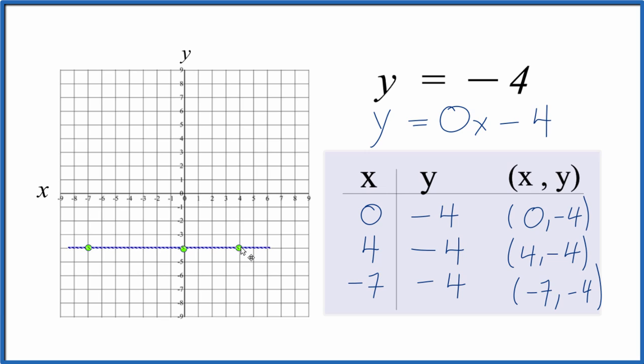Let's put a line through this, and then we can put arrows to show that it goes to infinity there. And that's our graph for y equals negative 4.